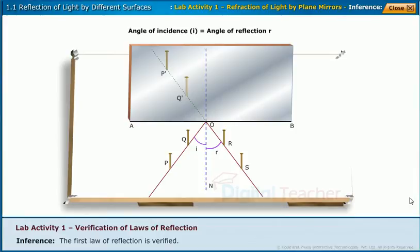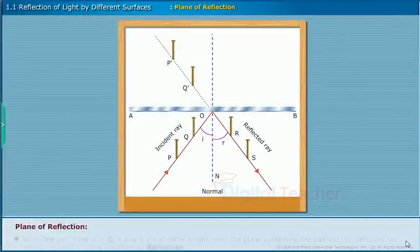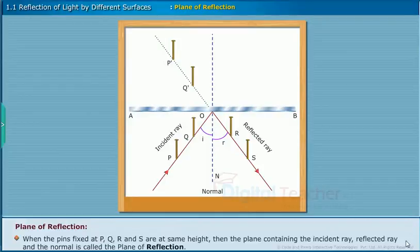Let us learn about the formation of an image by a light ray on the plane of reflection of a mirror. Plane of reflection: when the pins fixed at P, Q, R and S are at the same height, the plane containing the incident ray, reflected ray and the normal is called the plane of reflection.